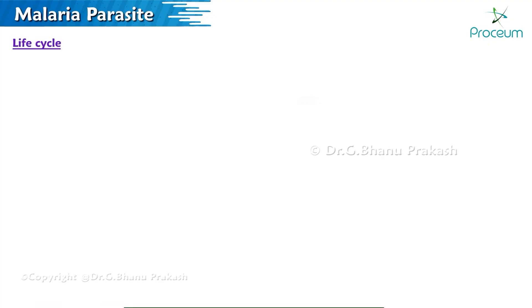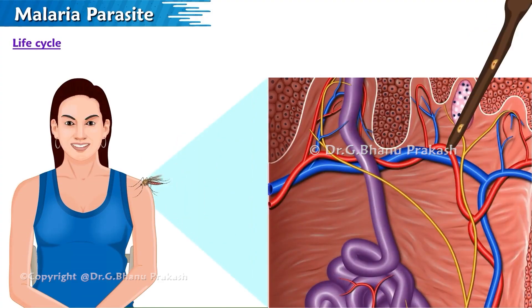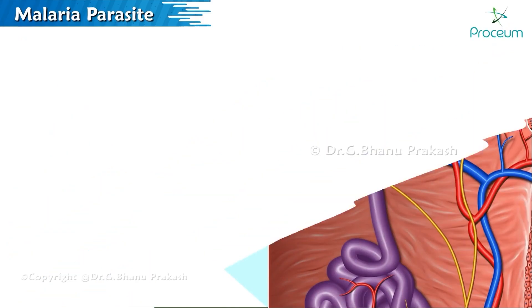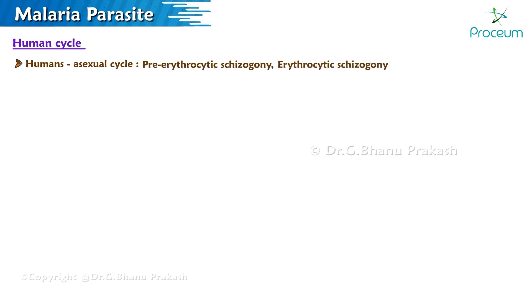The Life Cycle of a Malarial Parasite: Man gets infected by the bite of the vector, transmitting the sporozoites, which is the infective form. In humans, the asexual cycle takes place through three stages: pre-erythrocytic schizogony, erythrocytic schizogony, and gametogony.